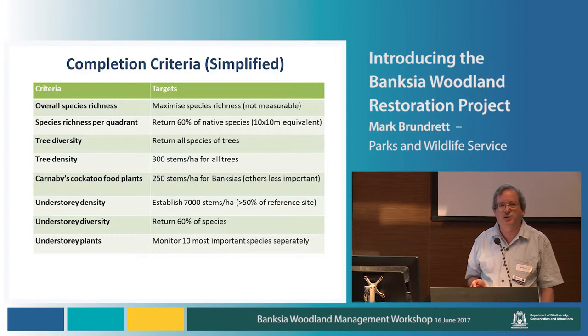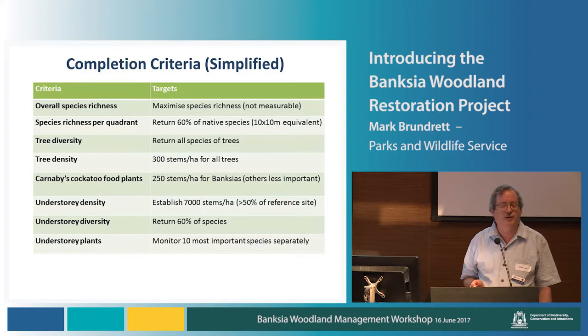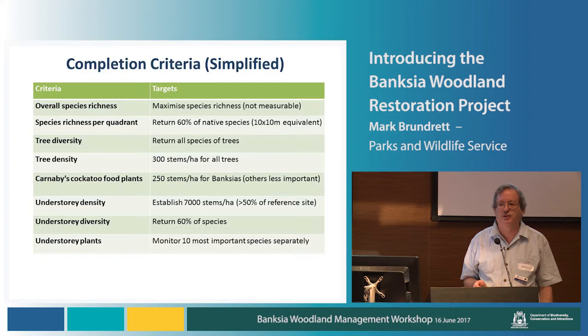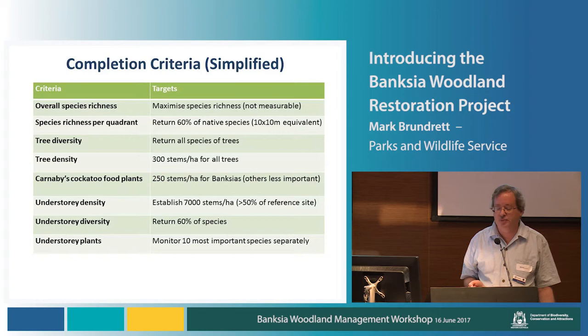We focused primarily on species richness per quadrat — species richness per 10 by 10 meter equivalent — because overall species richness is almost impossible to measure consistently. We have tree diversity targets, wanting all the trees back, with targets based on numbers at Jandakot Airport: about 300 stems per hectare total trees, and about 250 for banksia trees specifically, because banksia trees are the most important Carnaby's Cockatoo food in this system. We also set a target for understory density at about half of what we measured at Jandakot Airport, and targets for understory diversity and key understory plants.